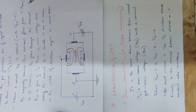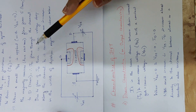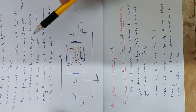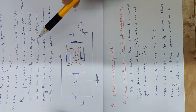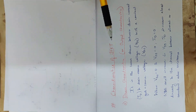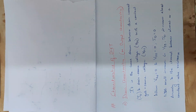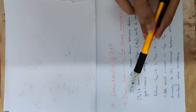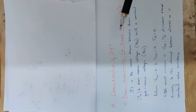We are learning how to explain the drain current. We are learning the characteristics of JFET. We have two characteristics. One is drain characteristics or output characteristics. And the two is transfer characteristics.